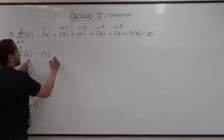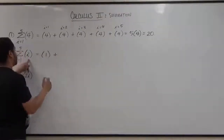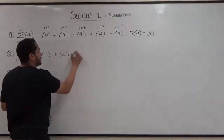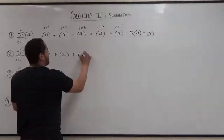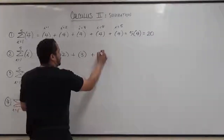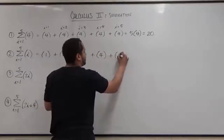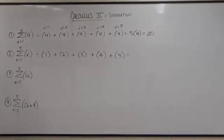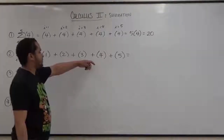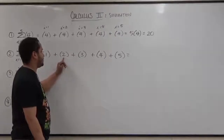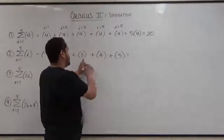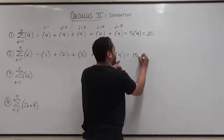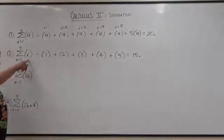Every variable i is going to change as the value of i changes. So when i is equivalent to 1 we have a 1. Then we add the value of i when it's 2, then 3, then 4, and finally 5. To get this sum we're just adding them: 1 plus 2 plus 3 plus 4 plus 5. 1 plus 2 is 3, plus 3 is 6, plus 4 is 10, plus 5 makes 15. That's our summation for the letter i.